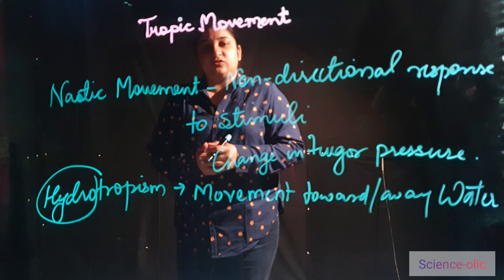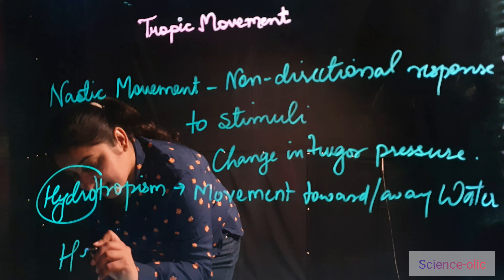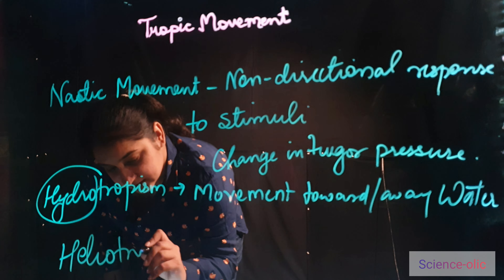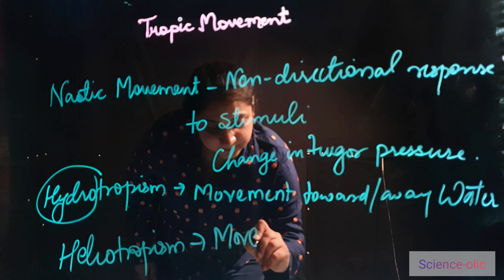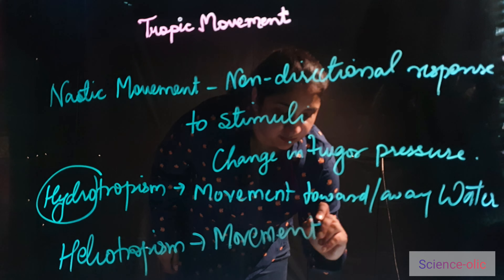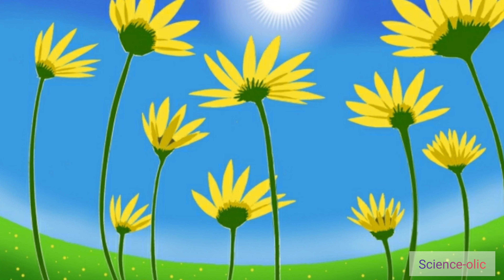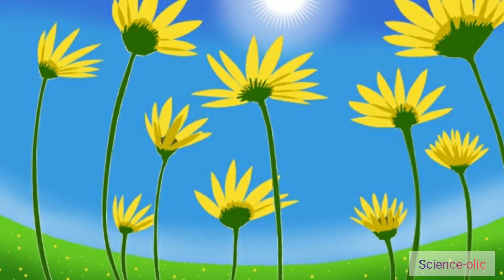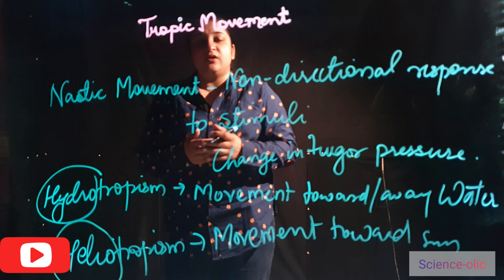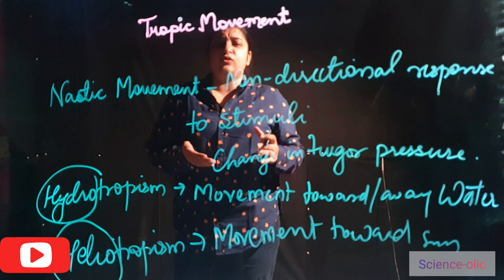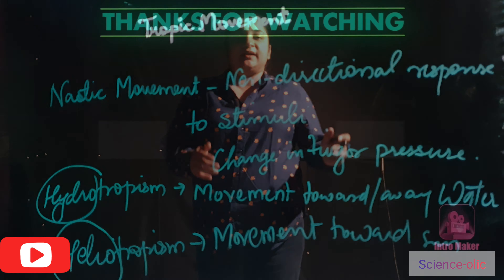There are some other examples also, like heliotropism. Heliotropism means movement towards the sun. This movement is shown specially by the sunflower — sunflower movement towards the sun is heliotropism. There is also movement in response to cold or hot temperatures. This is all about tropic movement.